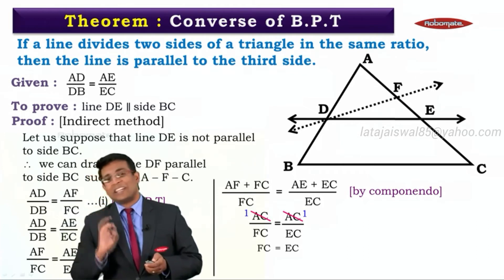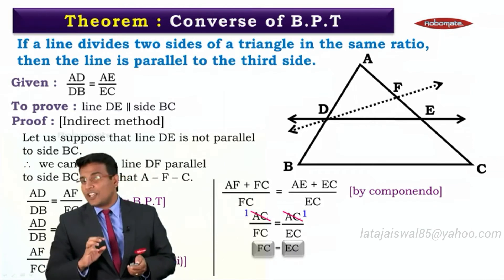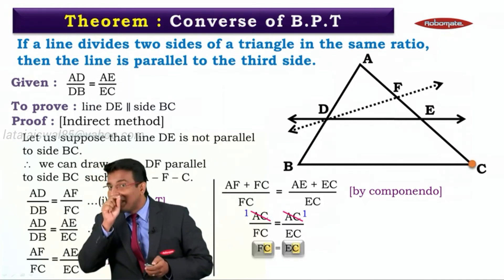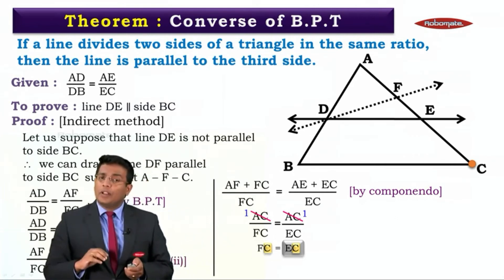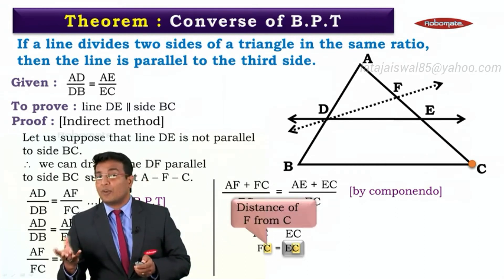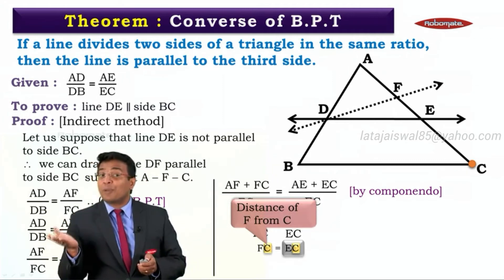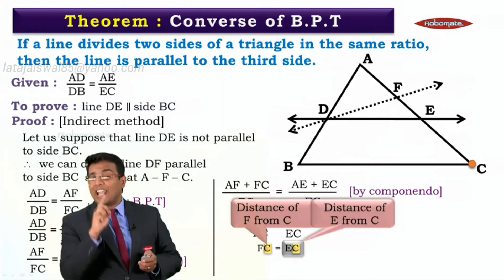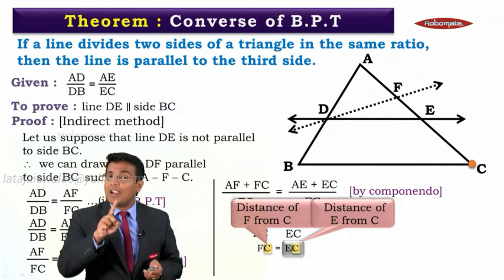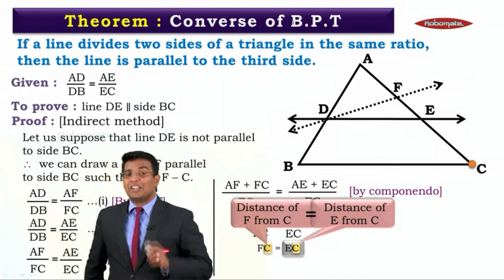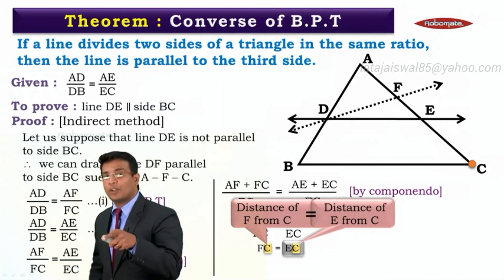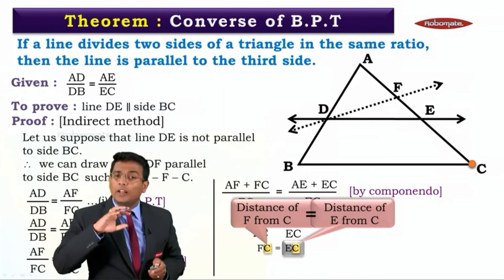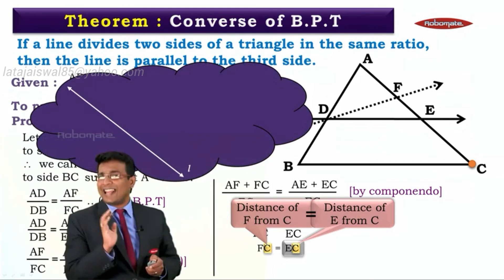Now let's understand what we can conclude from FC = EC. Observe there is a common letter C — we are talking about point C in the figure. FC means the distance of F from point C, and EC means the distance of E from point C. So what we have obtained is: the distance of F from C and the distance of E from C are equal.